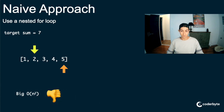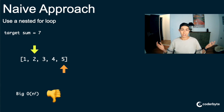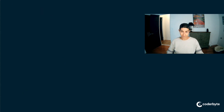That's a Big O of N squared because we're using a nested for loop, which is bad — don't do that in an interview. So how can we make this better? We can use the two-pointers approach and rather than iterating a potential N-squared amount of times, we can get it down to just looking at each element in the array once.